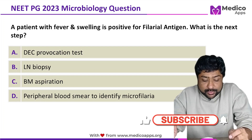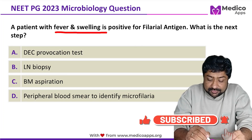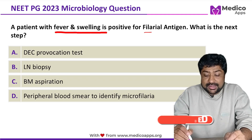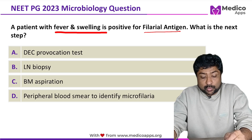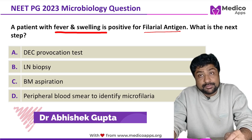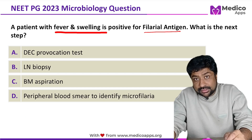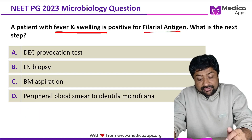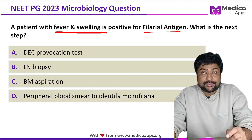This question appeared in NEAT PD 2023. A patient presented with fever and swelling and is positive for filarial antigen. The question asks for the next step. The options are: DEC provocation test, lymph node biopsy, bone marrow aspiration, and peripheral smear to identify microfilariae.